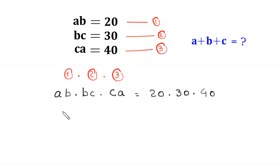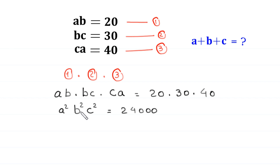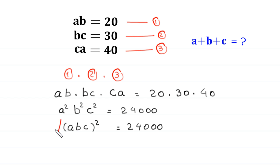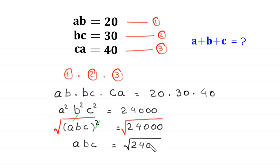This will become A squared B squared C squared is equal to 20 times 30 is 600, and 600 times 40 is 24,000. Now, A squared B squared C squared can be written as (ABC) whole squared is equal to 24,000. From here we take the square root of both sides, so ABC is equal to the square root of 24,000.